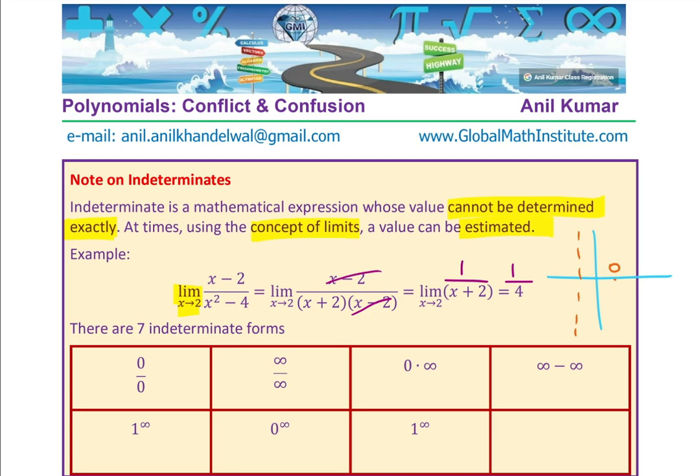And so the graph actually is something like this. So this hole is what the indeterminate was and we say, this is approaching at 2 a value of 1/4. So using the concept of limits, we can determine the value opposed by the expression for that variable value.